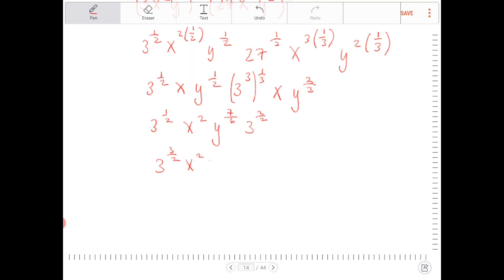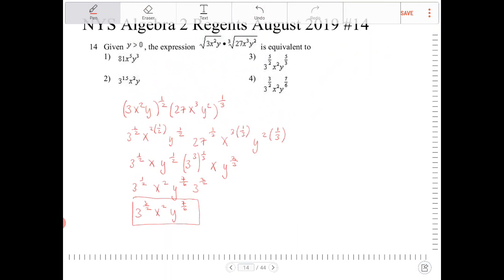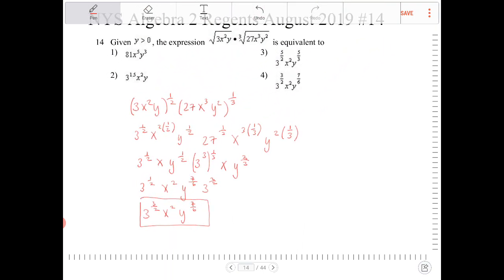x squared y to the 7 sixths. So this is my answer here. Let's see the answer choices if anything like that matches. So I have 3 to the three halves. It looks like option 4 is my answer.